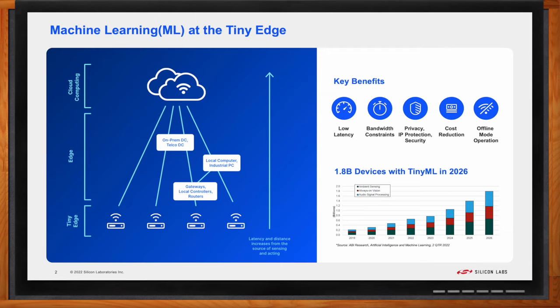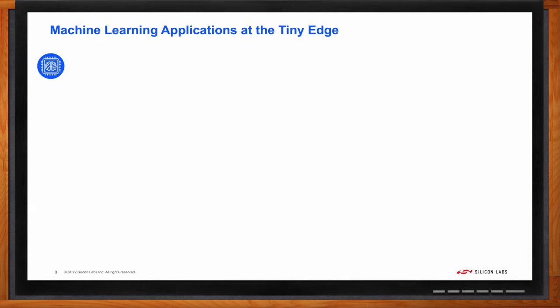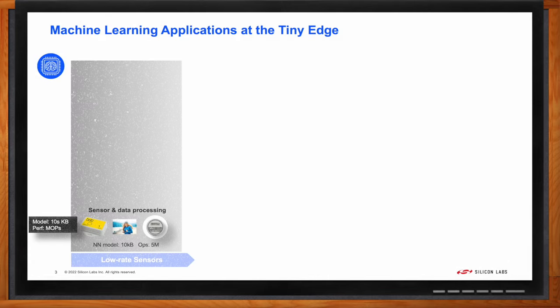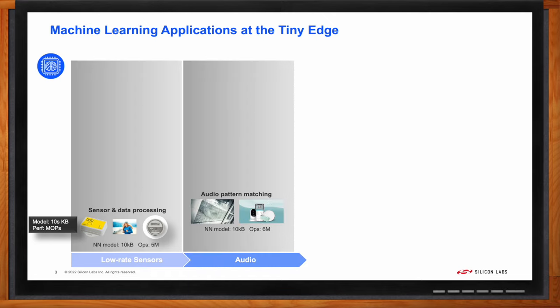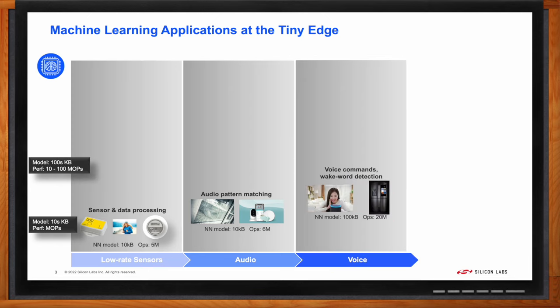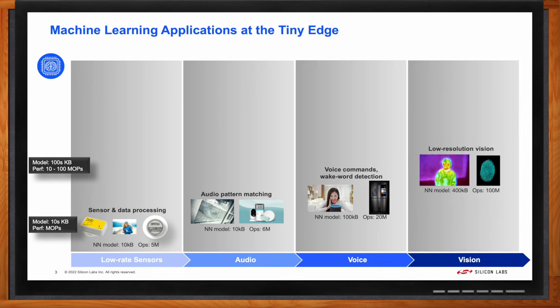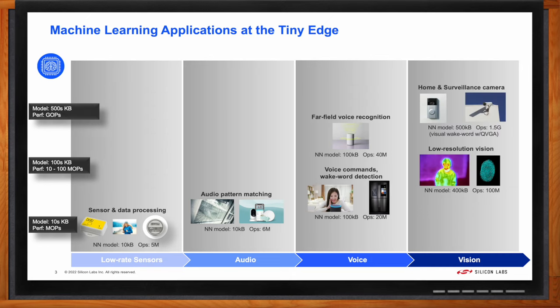So, Dan, what are some applications at the tiny edge? Machine learning is really a horizontal technology applicable across a wide variety of applications and market segments. It's helpful to describe these applications in the order of increasing chip resource requirements. When looking at an application, the amount of chip resources will increase primarily driven by the data throughput and the complexity of the analysis.